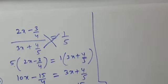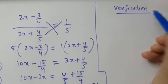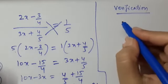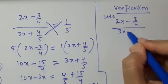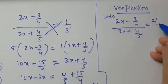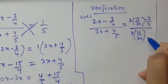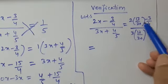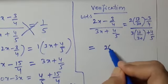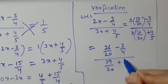Now let us do the verification. We substitute x equals 13 upon 20 in the left hand side. LHS is 2x minus 3 upon 4, divided by 3x plus 4 upon 5, which equals 2 into 13 upon 20 minus 3 upon 4, divided by 3 into 13 upon 20 plus 4 upon 5. This simplifies to 13 upon 10 minus 3 upon 4, divided by 39 upon 20 plus 4 upon 5.